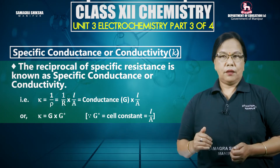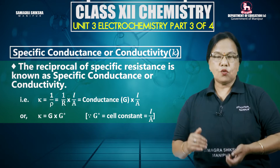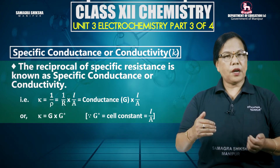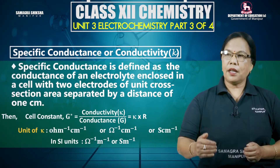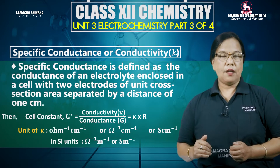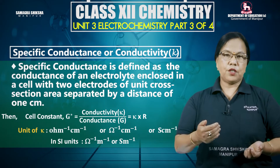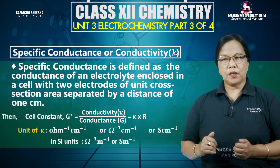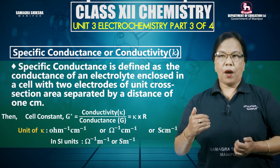Conductance is 1 by R. The inverse of resistance is conductance. Kappa equals G into L by A. Kappa is the conductivity. Conductivity equals conductance into cell constant. Cell constant is represented as G star, which is L by A. Specific resistance is defined as the conductance of an electrolyte enclosed in a cell with two electrodes of unit cross-section area separated by a distance of 1 cm.